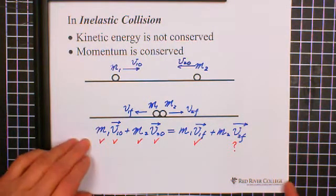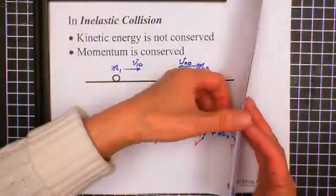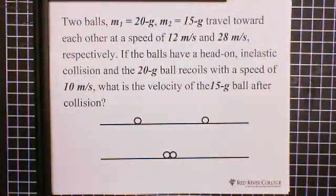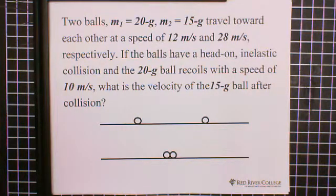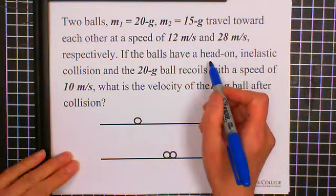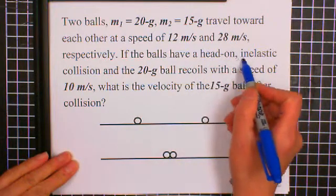Let's look at the example. Two balls: M1 equals 20 grams, M2 equals 15 grams, travel towards each other at speeds of 12 meters per second and 28 meters per second respectively. If the balls have a head-on inelastic collision...